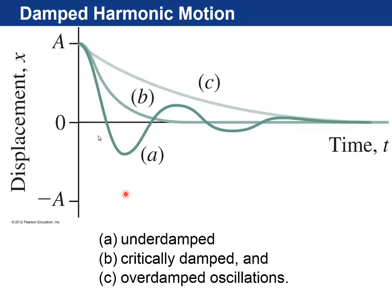And then this is showing you three different cases of damped harmonic motion. So underdamped means that it oscillates for a while. Critically damped means it comes down exponentially. And overdamped oscillation is a very quick decrease to equilibrium.